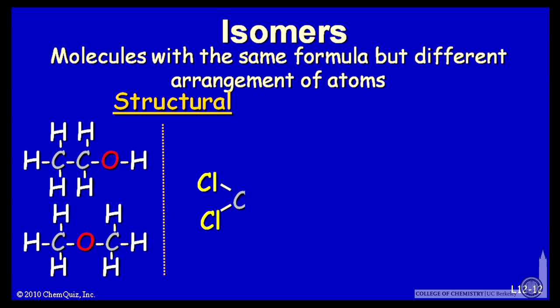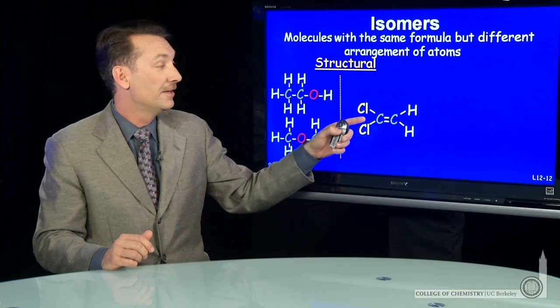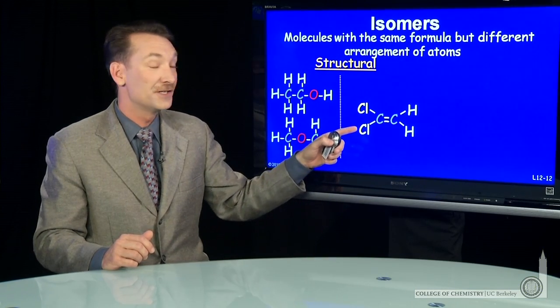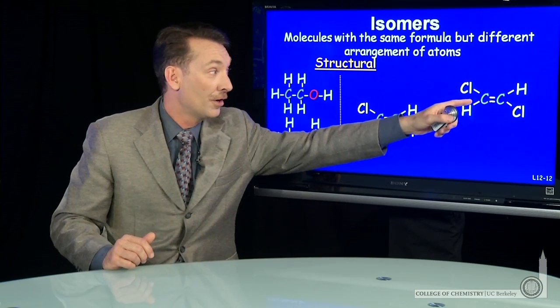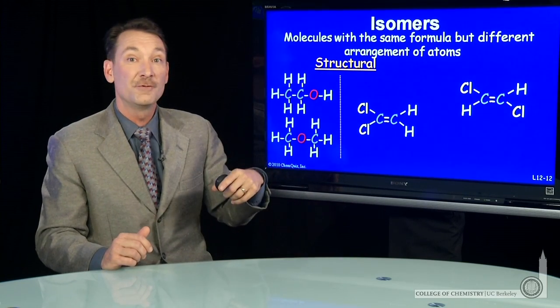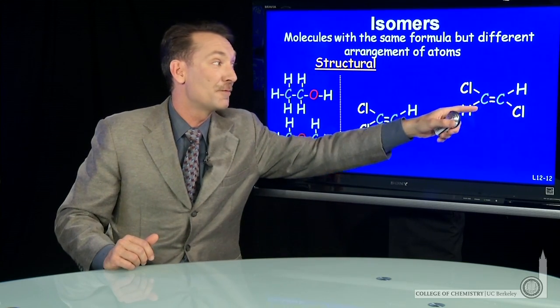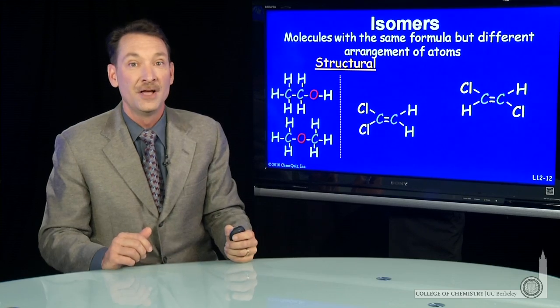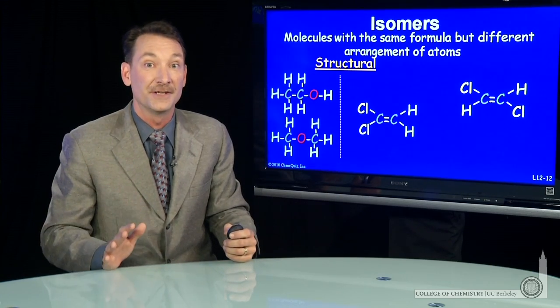Here are two more structural isomers: C2H2Cl2. This molecule, I can arrange the chlorines and carbons like this or like this. Here I have a carbon with two chlorines. Here I have a carbon with a chlorine and a hydrogen. Those are structural isomers. The bonding patterns are different.